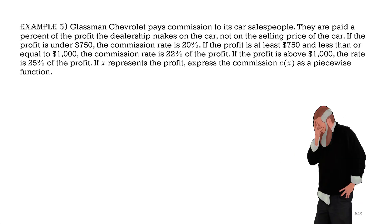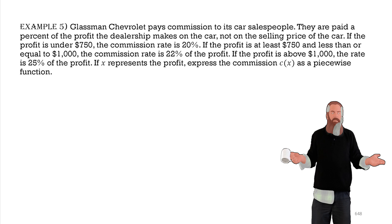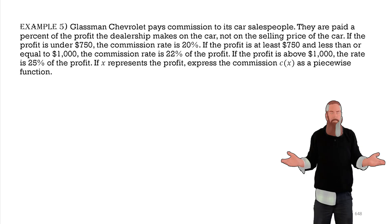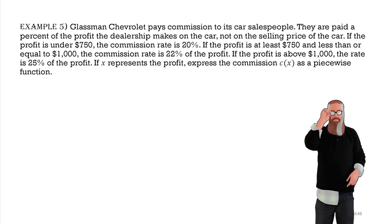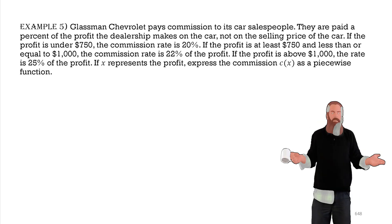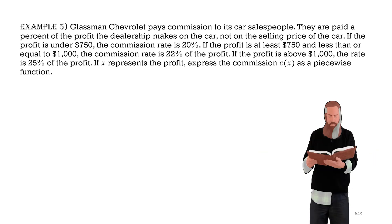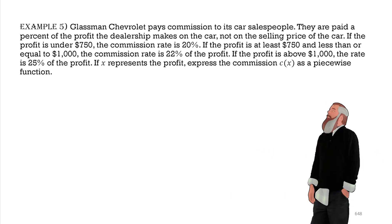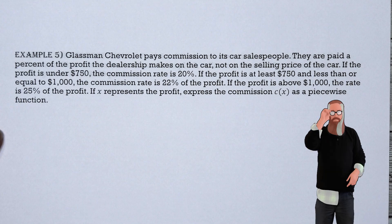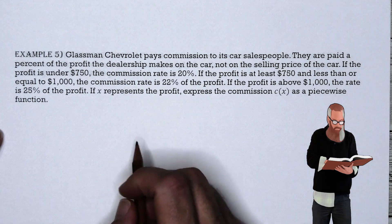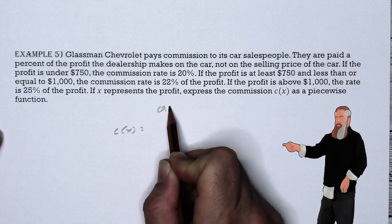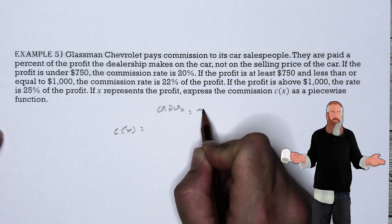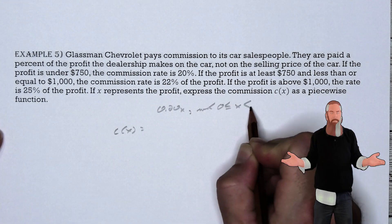Glassman Chevrolet pays commission to its car salespeople as a percentage of the dealership's profit, not the sale price. If profit is under $750, commission rate is 20%. If profit is $750 to $1,000, the rate is 22%. If profit is above $1,000, the rate is 25%. Express the commission C(x) as a piecewise function. For 0 ≤ x < 750: C(x) = 0.20x.